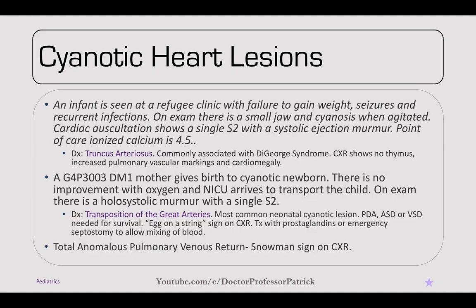An infant at a refugee clinic has failure to gain weight, seizures, recurrent infections, a small jaw, and cyanosis when agitated. Cardiac auscultation shows a single S2 with a systolic ejection murmur. Ionized calcium is 4.5 (low). This is DiGeorge syndrome with truncus arteriosus. Chest x-ray may show absence of thymus and increased pulmonary vascular markings with cardiomegaly. Treatment is surgical repair.